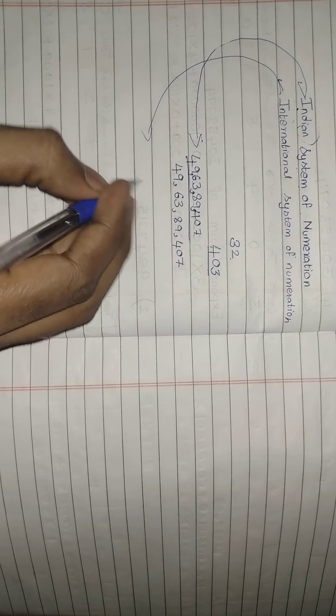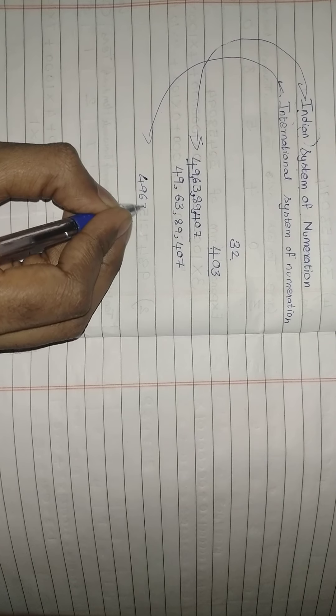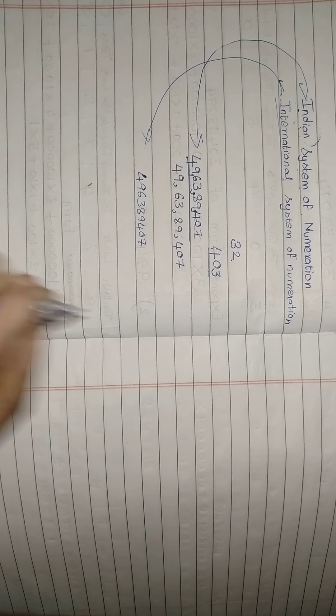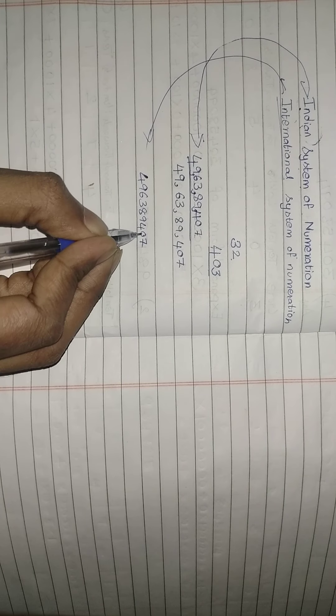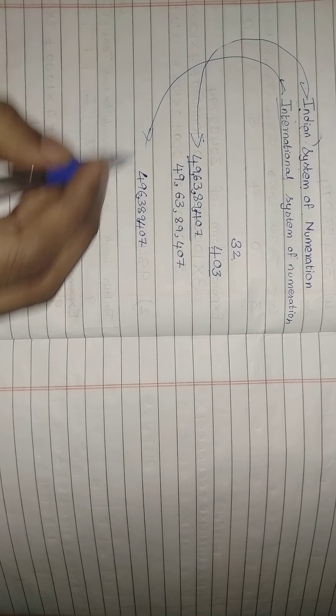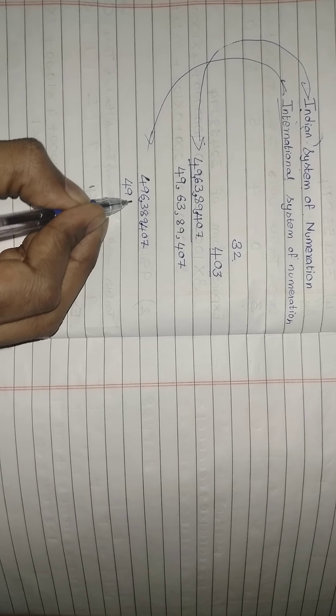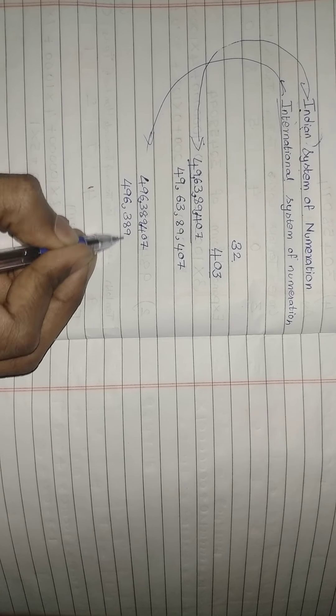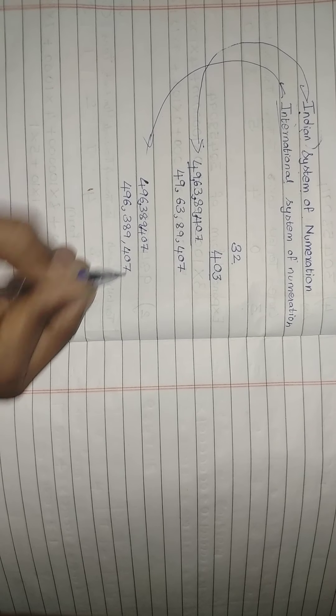Now in the International system of numeration, take the same number — for example 496389407. How do I place the commas? In the International system, you count from the last digit: one, two, three — and after every three digits you place a comma.